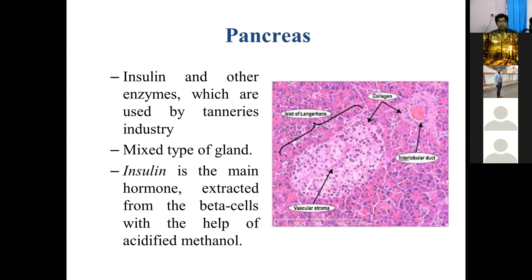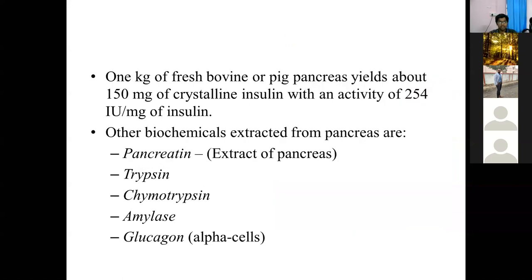Insulin is the main hormone secreted from beta cells. It is extracted with the help of acidified methanol and has a major role in the treatment of diabetes, the metabolic disorder from which people worldwide suffer. One report states that one kilogram of fresh porcine pancreas yields about 150 mg of crystalline insulin with an activity of 254 IU per mg. The concentration of insulin obtained from one animal is very small, so we must take care during collection and extraction.